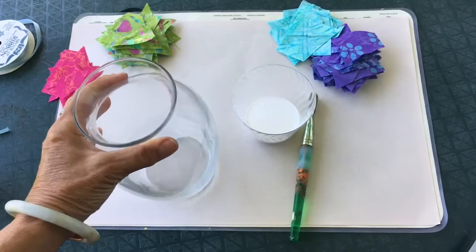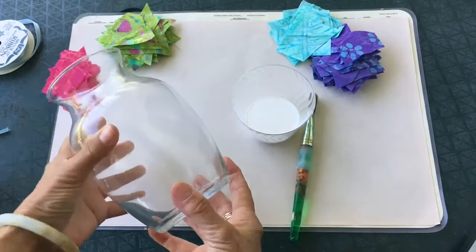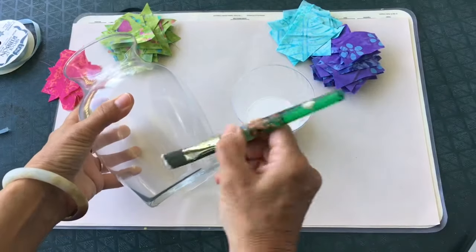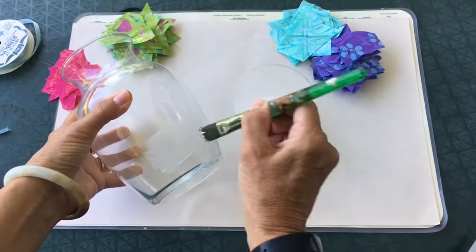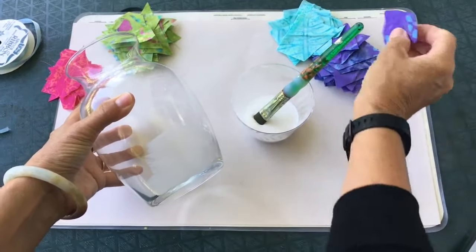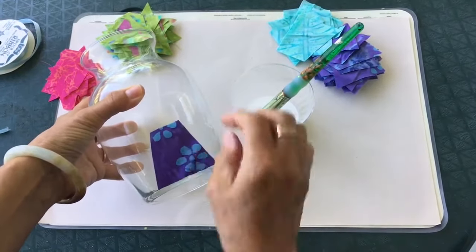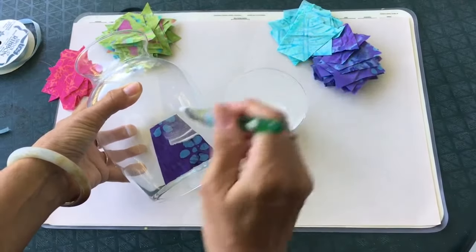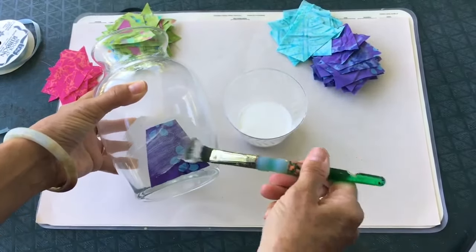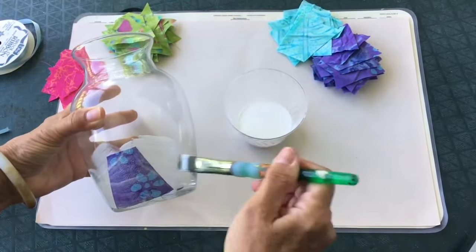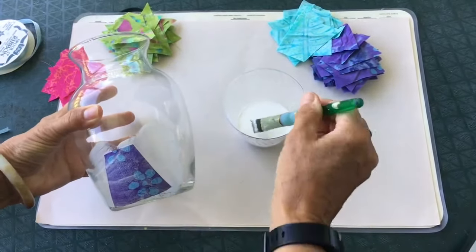So to attach the fabric onto your vase, we're going to apply a little bit of glue like this. Choose your color and place it. And then brush it over the top. It looks kind of milky but it will dry clear when we're finished. So brush, brush, brush. Get it a little bit sticky.